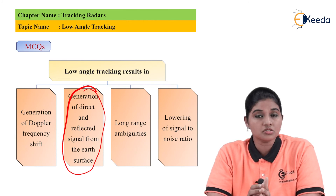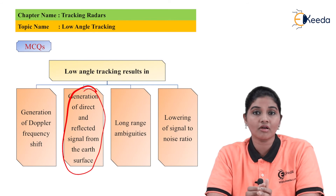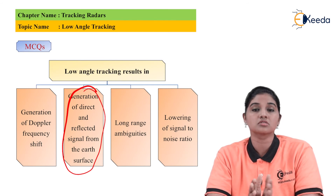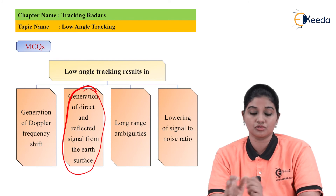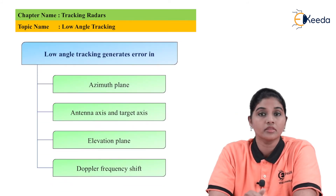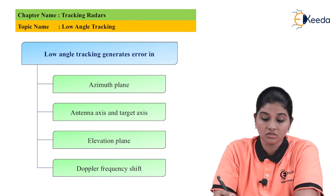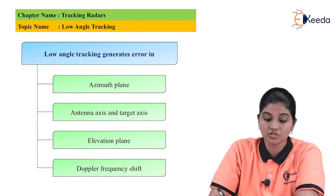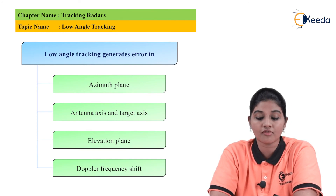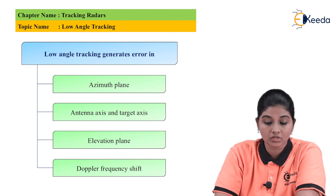By differentiating between the two signals, it is possible to find the actual range or the actual angular measurement. This error can also be avoided by finding the actual value of the range using certain radar system parameters. MCQ 2: Low angle tracking generates errors in — options are: azimuth plane; antenna axis and target axis; elevation plane; and Doppler frequency shift. The answer is the elevation plane.